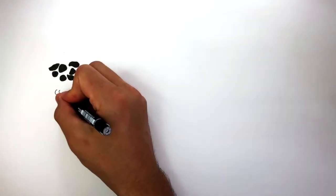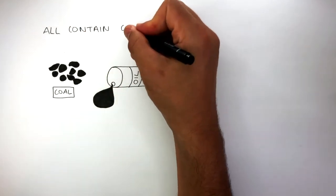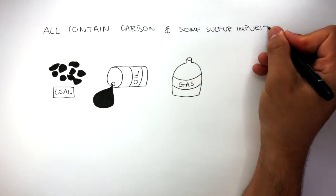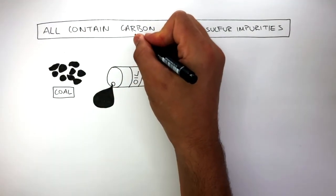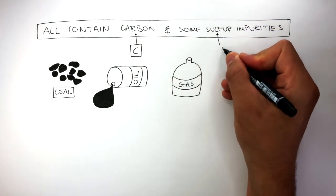There are three major fossil fuels: coal, oil and natural gas. They all contain carbon and some sulfur impurities.